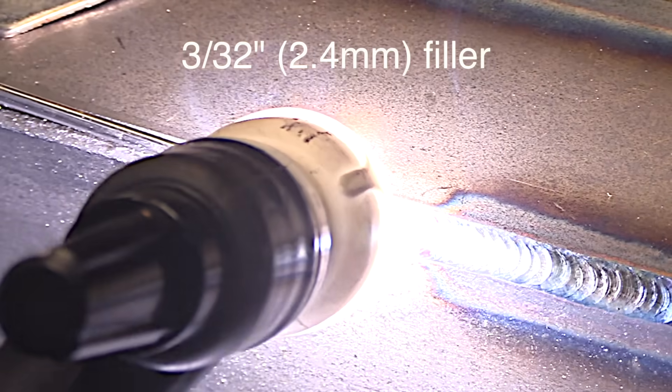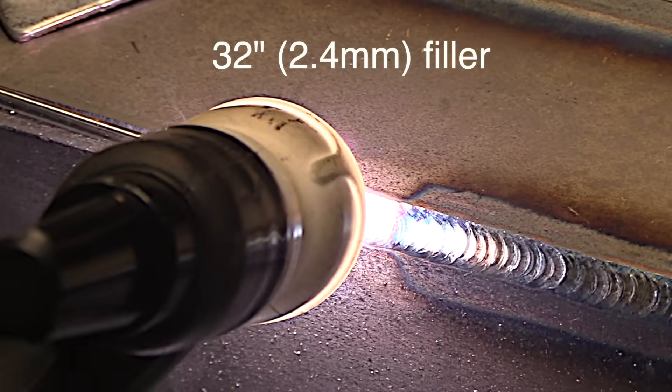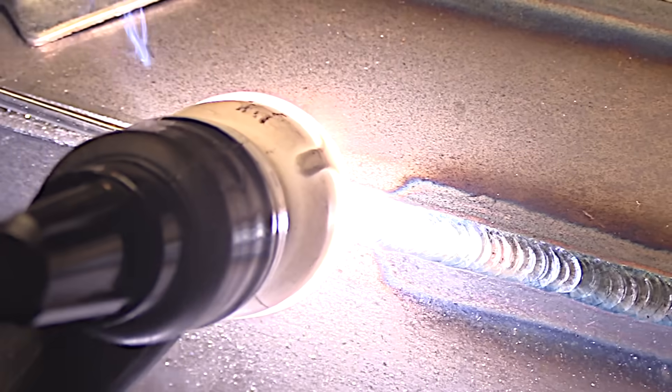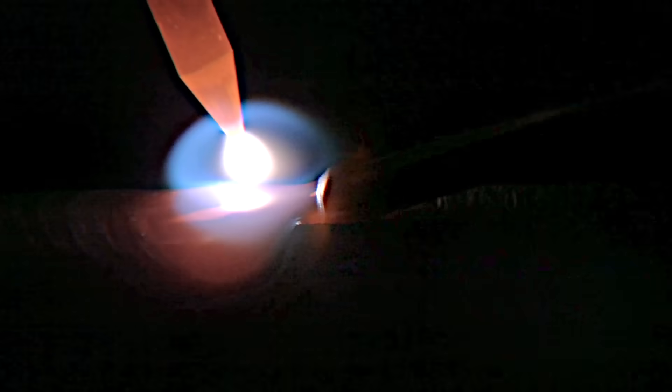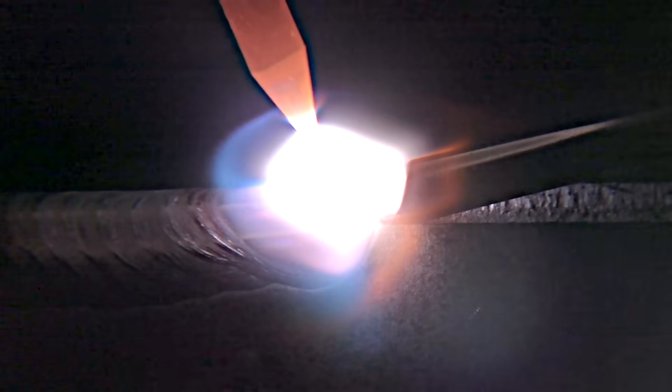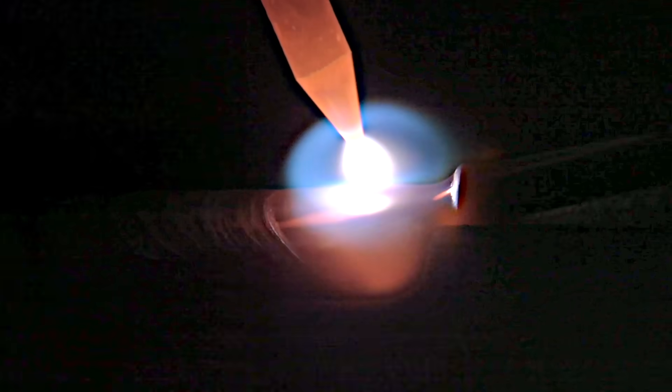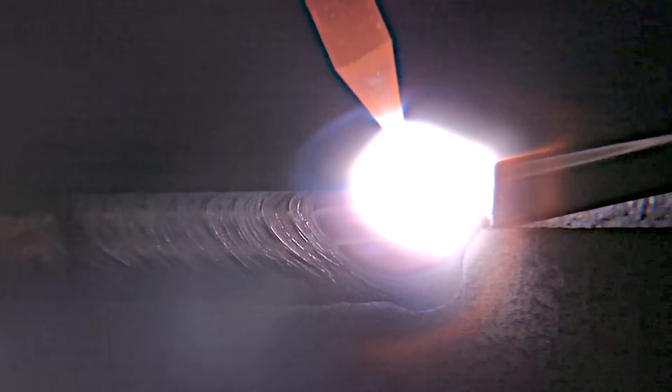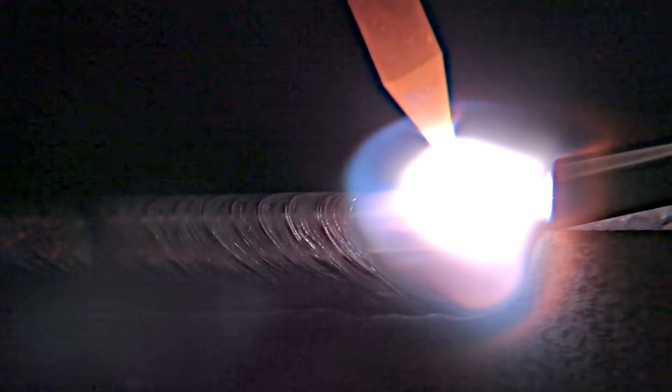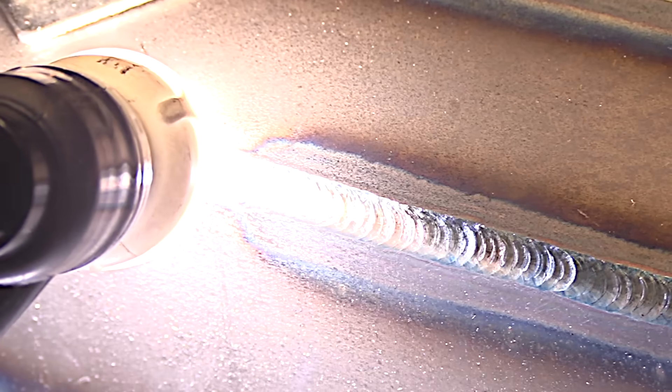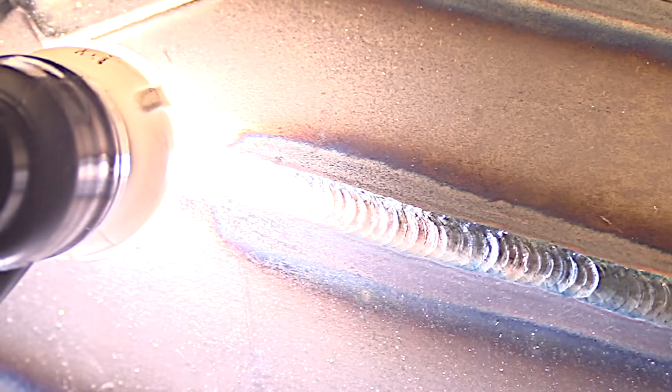And I'm going to step up to a 3/32 filler wire so that I can just lay it in that trough in that outside corner joint and just go right over it easy as pie. Now the pulse setting really comes in handy here. This is a little bit more difficult to keep that wire in the puddle and keep it from balling up without pulse. You can still do it without pulse. Pulse just makes it dead easy.